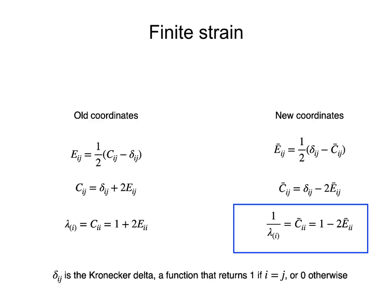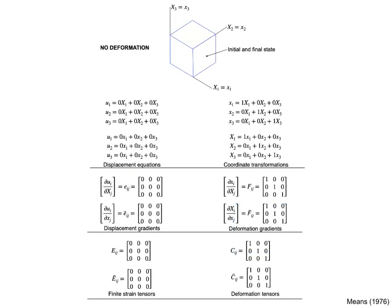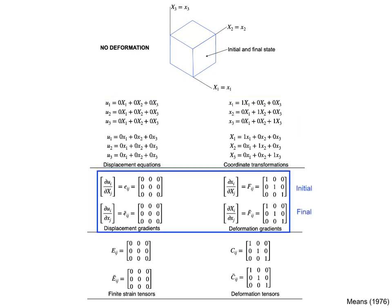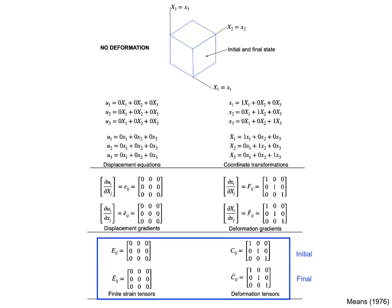Thus finite strain tensors and deformation tensors contain exchangeable information, and one just needs to determine one in either the undeformed or deformed state to estimate the strain. In the simplest example of no deformation, the displacement equations and coordinate transformations show that displacements are zero and initial and final coordinates are the same. The displacement gradients are zero and the deformation gradients are equal to the identity matrix. The finite strain tensors are zero and the deformation tensors are equal to the identity matrix, in either the initial or final state. The same results hold for rigid body translation: displacement gradients remain zero and deformation gradients remain the identity matrix.